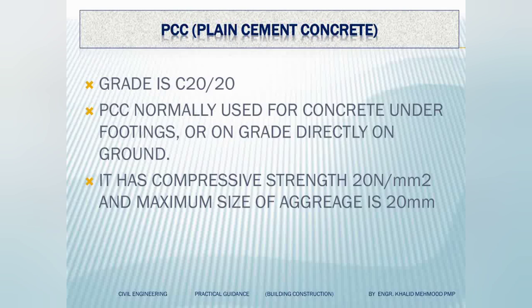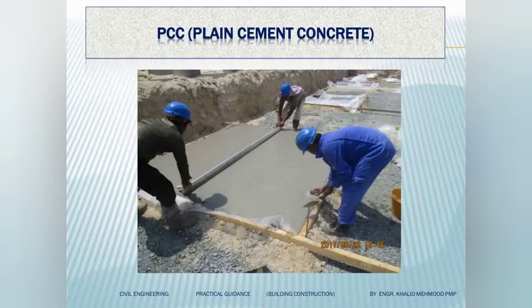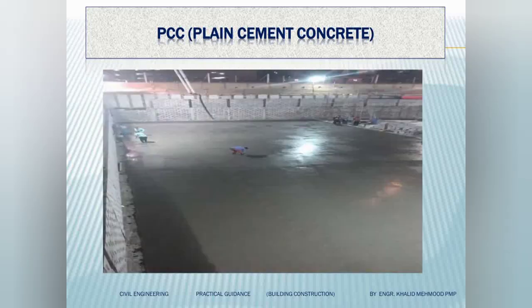First of all, PCC concrete — plain cement concrete. Its grade is C20/20. C20 means its compressive strength is 20 Newton per millimeter square, i.e., 20 megapascal, and maximum aggregate size is 20 mm. PCC is normally used under foundations and under the raft. It is a non-structural concrete.